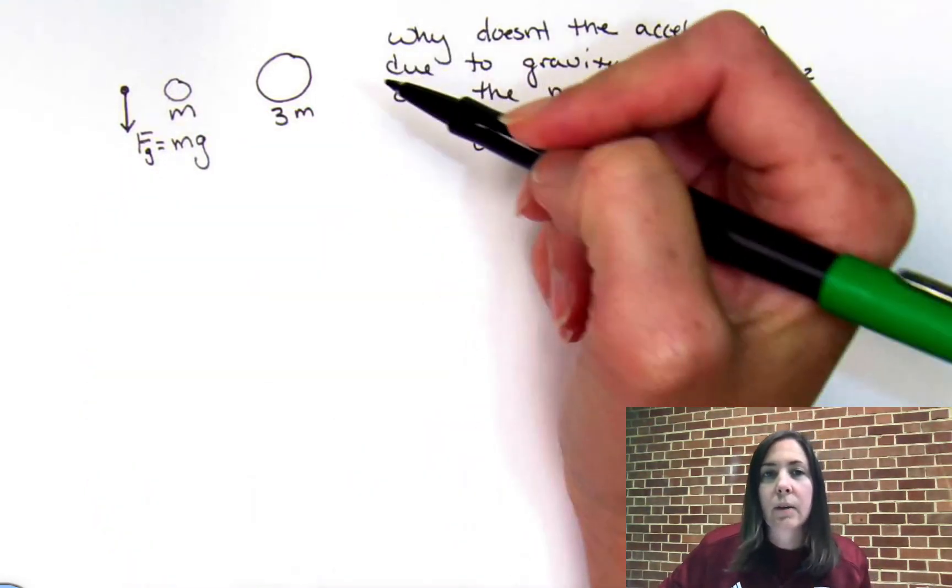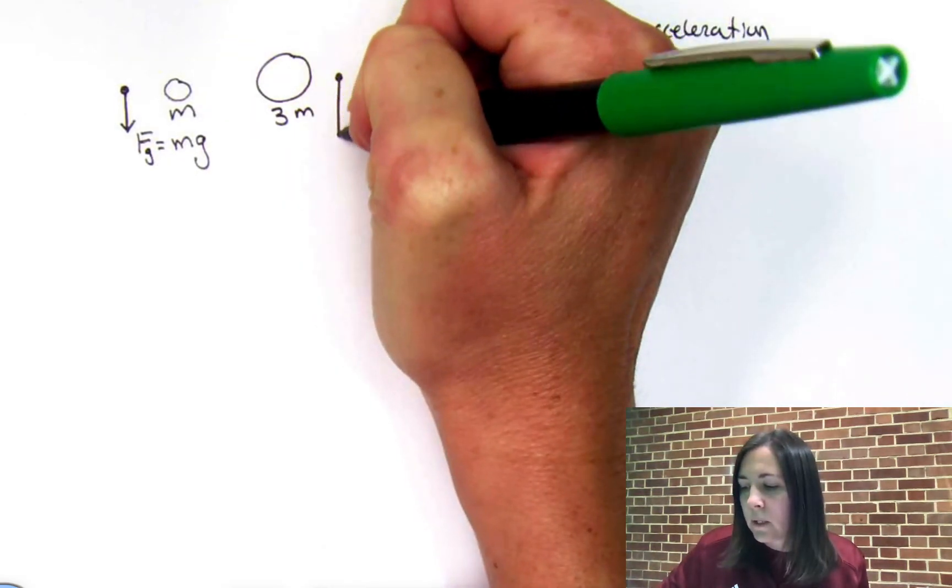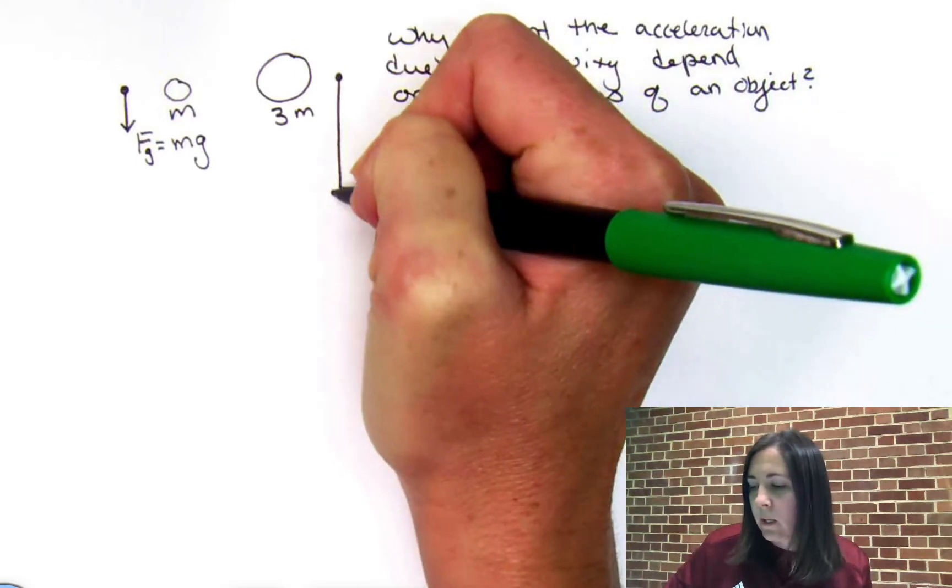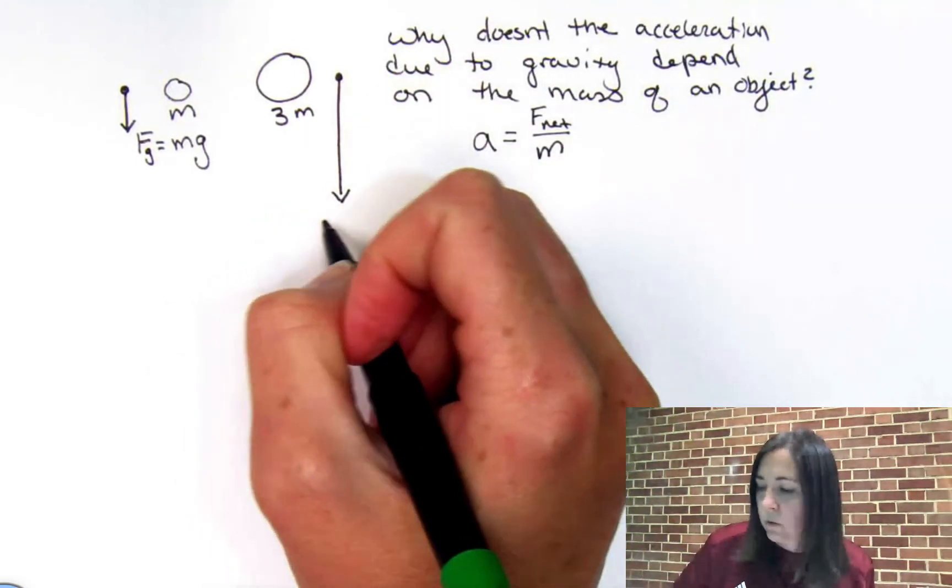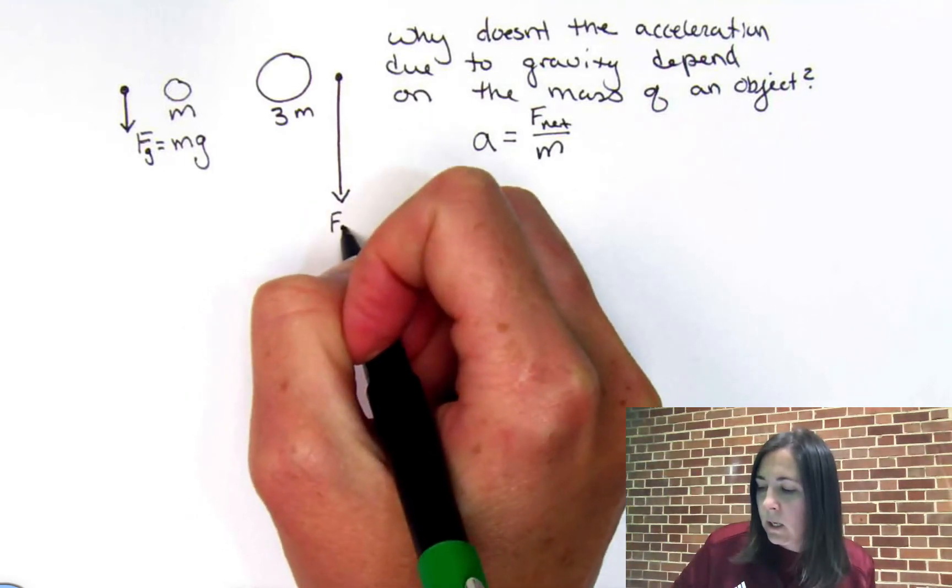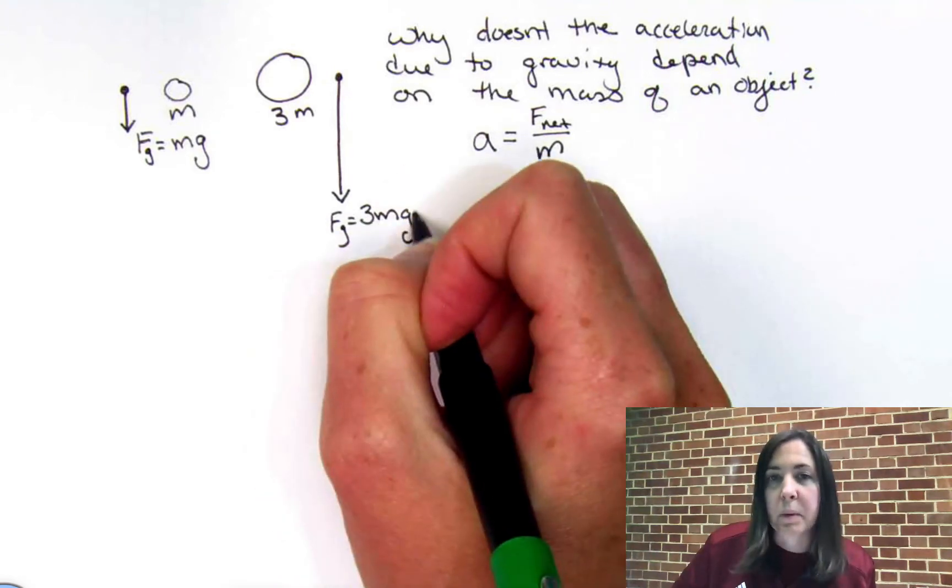The free body diagram for this guy is going to look the same, but since the mass of the rock is three times bigger, the force of gravity, the weight of the rock, is going to be three times bigger. So, the force of gravity on this guy is going to be three m times g, three times bigger.